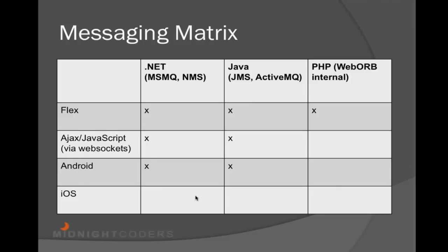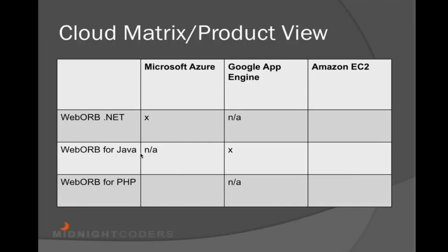There's another question: Abby is asking if video streaming will be available on EC2 as well. Yes, definitely. Pretty much everything you know today about Web Warp is going to be available for all cloud backends. If we take Web Warp for .NET, we have support for Microsoft Azure, and everything that Web Warp for .NET provides today — remoting, data management, and messaging — is available in the Azure environment. The same thing is going to be true with EC2 as well.